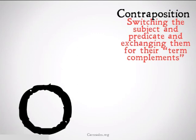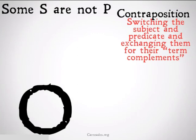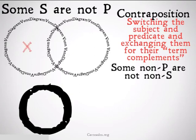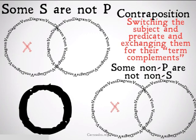O can be done with contraposition as well. Some S are not P. We fill in our diagram as normal. The contraposition is some non-P are not non-S — that's just a double negation on the S, so we could say this as some non-P are S. If something that is not in that P circle is an S, that X just goes in the S-only side. So this is also a valid form of argument.